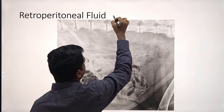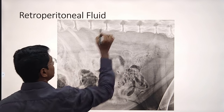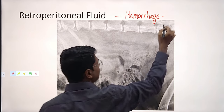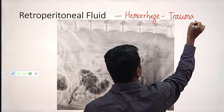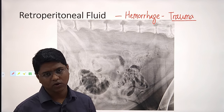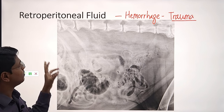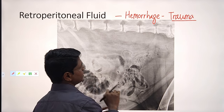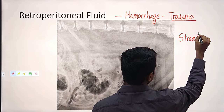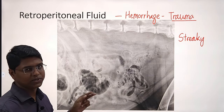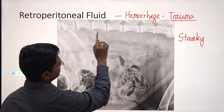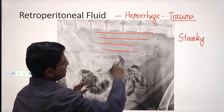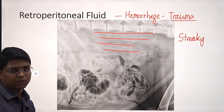Maybe there is some vehicular trauma or any kind of trauma — you will find hemorrhage into the retroperitoneal space, unlike peritoneal effusion in which you find exudate or transudate. The characteristic pattern specific for retroperitoneal fluid is a streaky appearance — alternating opacities of fat and soft tissue. Here you see this portion is soft tissue opacity, then slightly fat opacity, then soft tissue opacity. This streaking can be diagnosed as presence of retroperitoneal fluid.